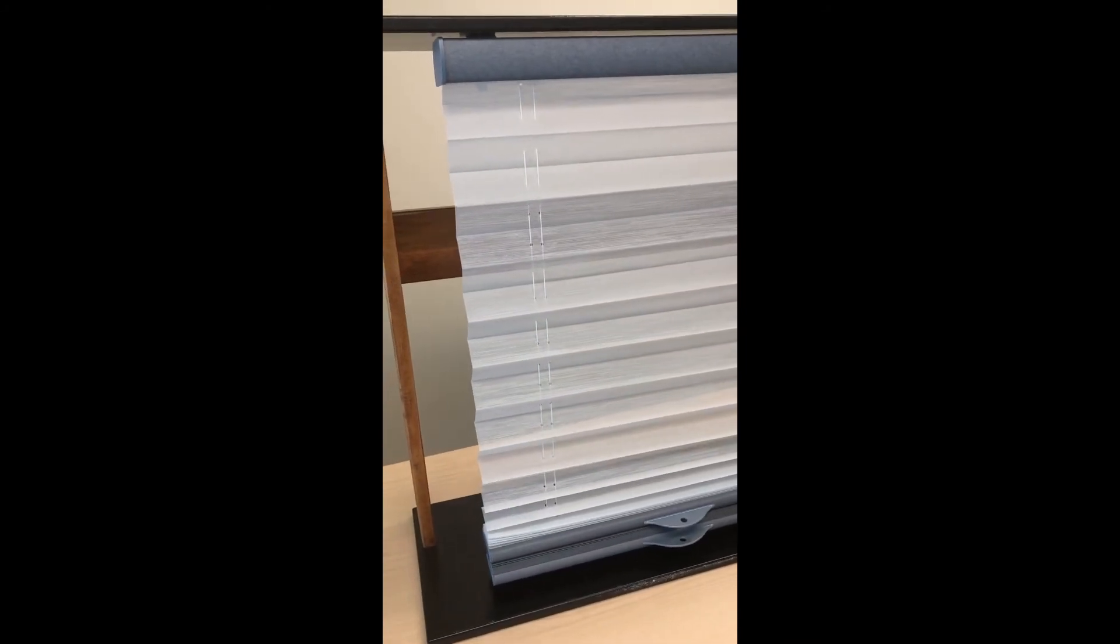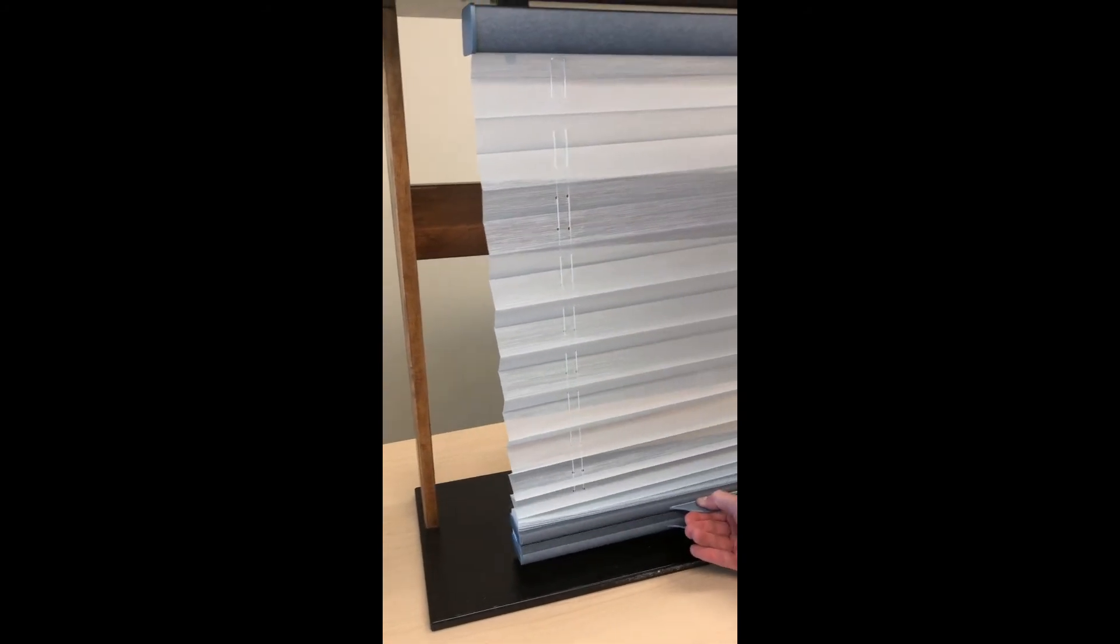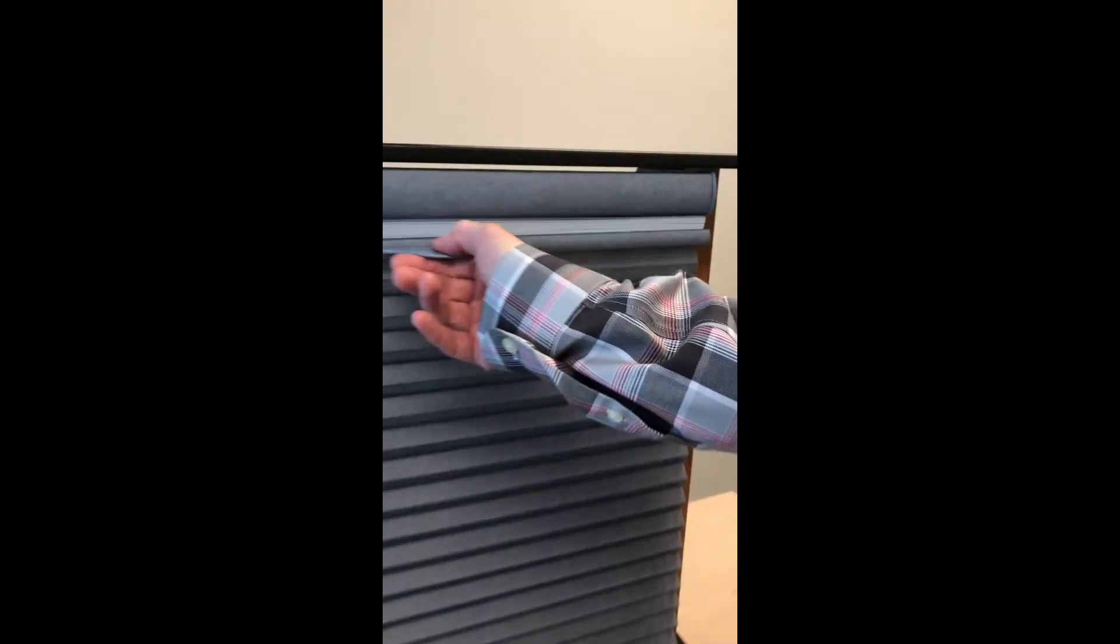Because the slit you made in the sheer fabric is behind the sheer material when looking at the front of the shade, it will not be visible after you've performed this adjustment. Notice now that our center rail is perfectly aligned.